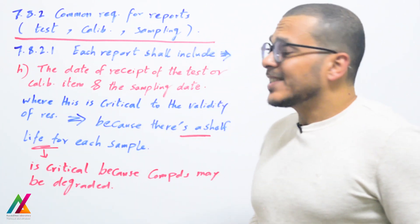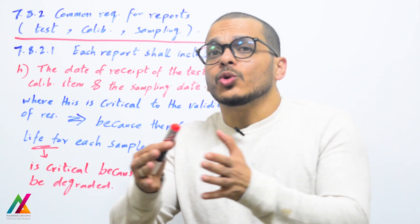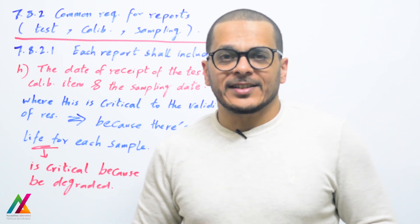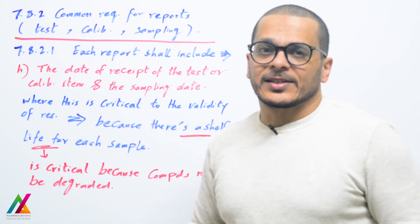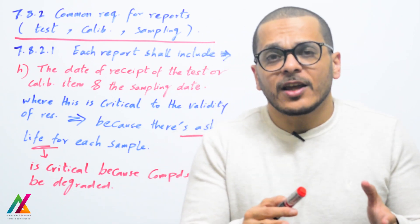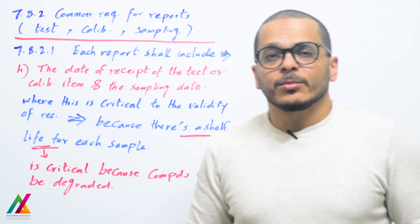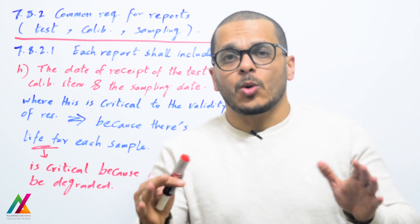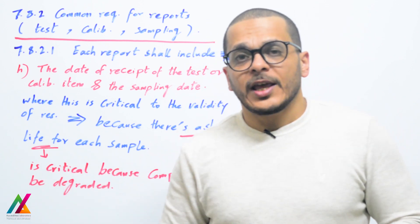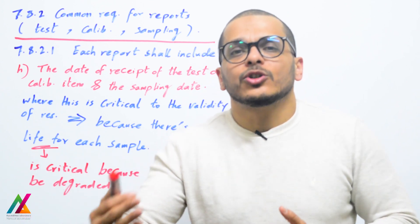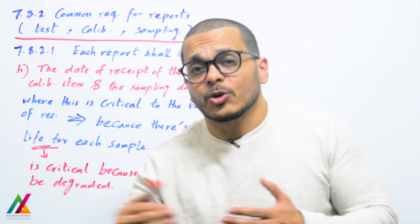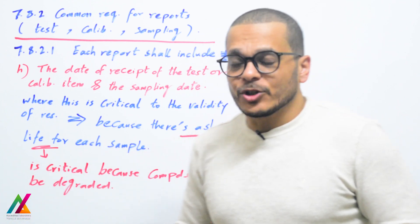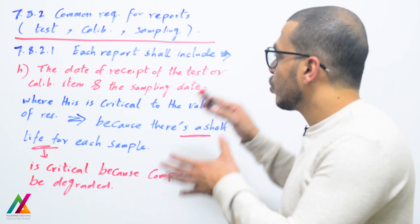If the customer insists on analyzing the sample despite unsuitable conditions, the lab will proceed but shall mention the condition of the sample as received in the final report to protect the lab. The date of receipt of the test or calibration item must also be recorded. The sampling date and time shall be recorded before giving the sample to the analyst, as this is critical to the validity of results — some samples have a shelf life. For example, in microbiology, certain bacteria must be analyzed within six hours, while in chemistry some analytes must be analyzed within a specific time after collection.